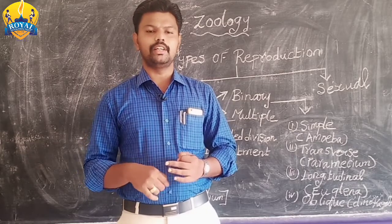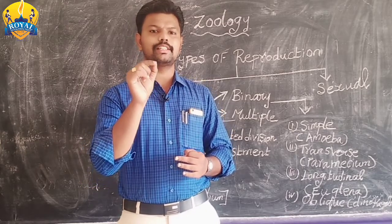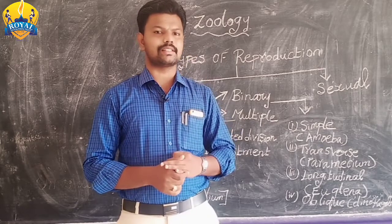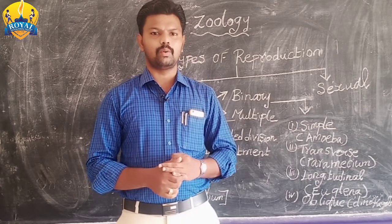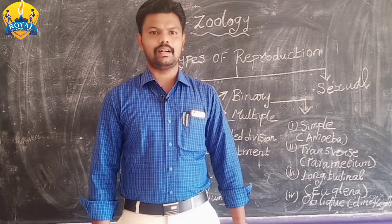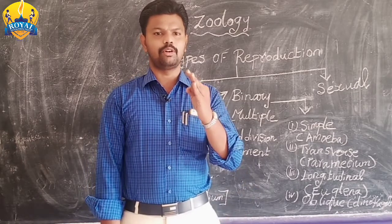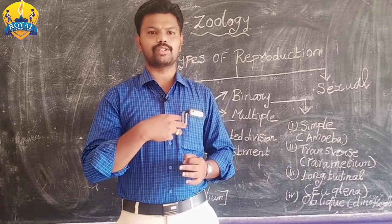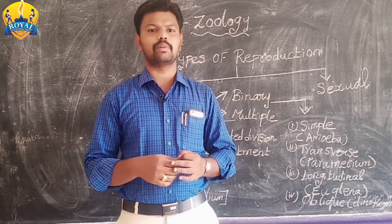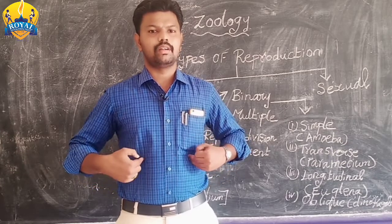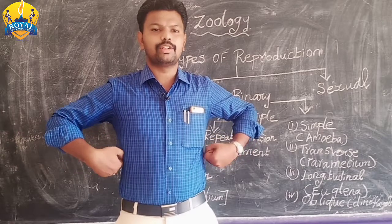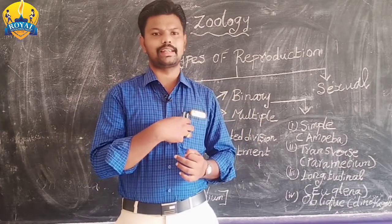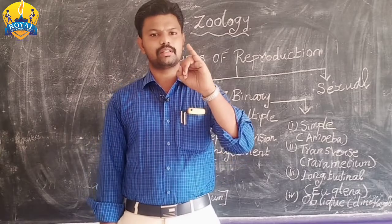The third system is the skeletal system. In our body, a total of 206 bones are present — that system is called the skeletal system. Its functions include helping with movement and giving protection to our internal organs. For example, the rib cage gives protection to the internal organs present in the thoracic cavity.